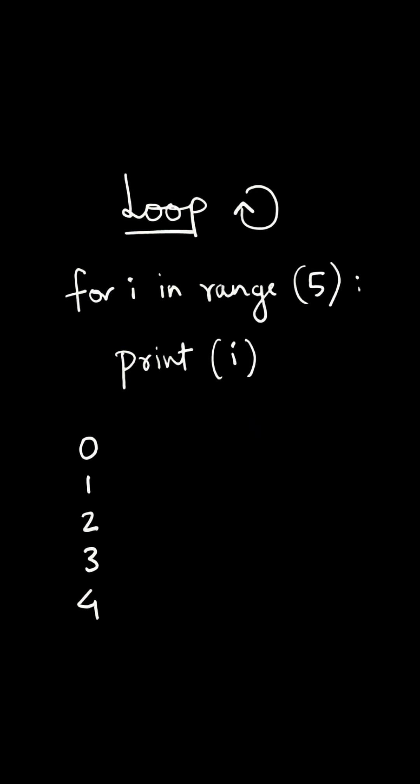Next we have loops. Loop means repetition. If you want to print numbers from 0 to 4, we can do it using a loop. For i in range 5, print i. So it prints 0, 1, 2, 3, 4, total of 5 numbers.